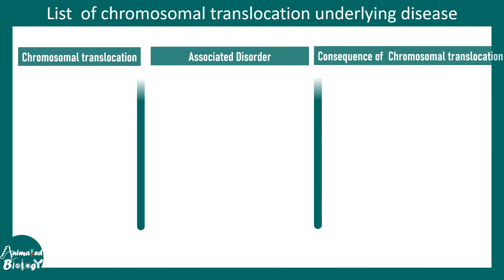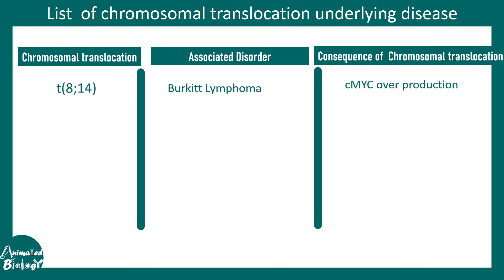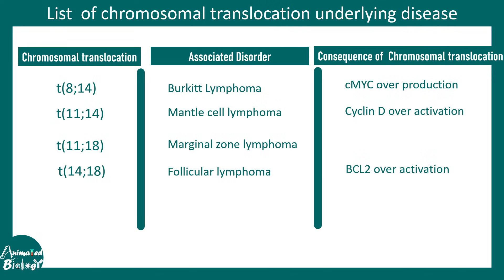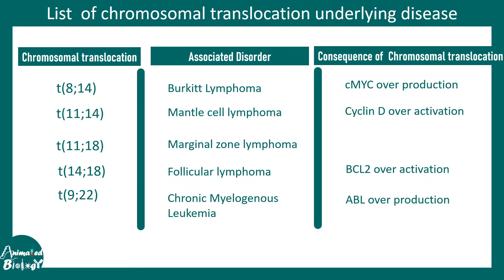Here is a quick review. Translocation between 8 and 14 leads to Burkitt's lymphoma, where CMYC overproduction occurs. Translocation between 11 and 14 leads to mantle cell lymphoma, where cyclin D overactivation occurs. Translocation between 11 and 18 leads to marginal zone lymphoma. Translocation between 14 and 18 leads to follicular lymphoma, where BCL2 overactivation occurs. And translocation between 9 and 22 — the Philadelphia chromosome — leads to chronic myelogenous leukemia, where ABL overproduction occurs.